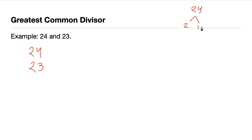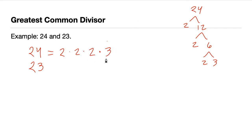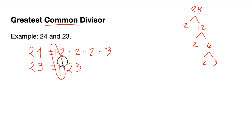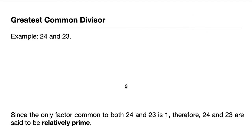For 24, using factor 2: 24 is 2 times 12, which is 2 times 6, which is 2 times 3. So 24 = 2 × 2 × 2 × 3. As for 23, it is a prime number, so its only factors are 23 and 1. Since the only common factor of both 23 and 24 is 1, we say they are relatively prime to each other.